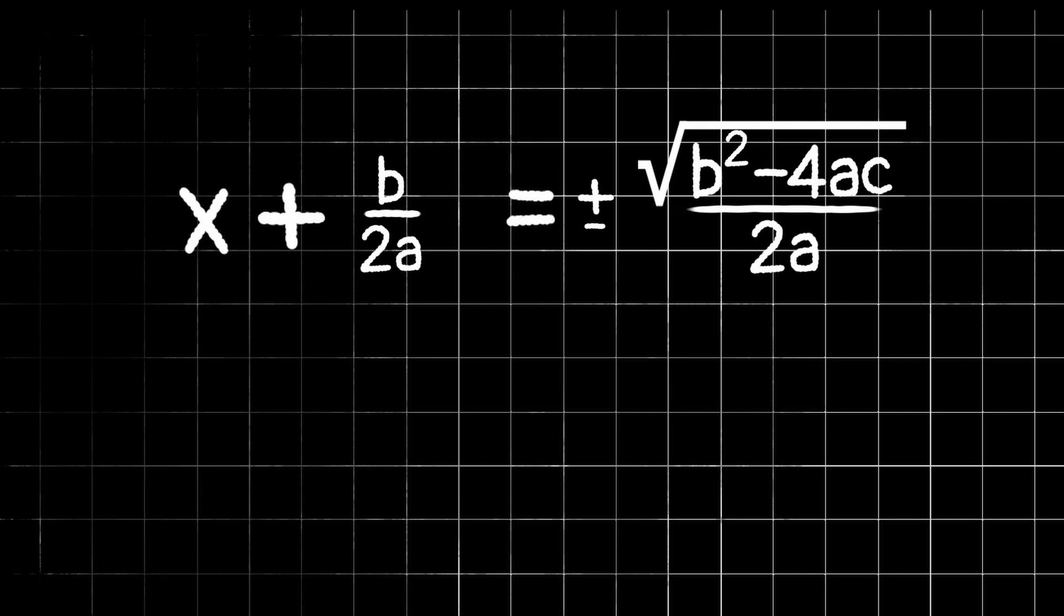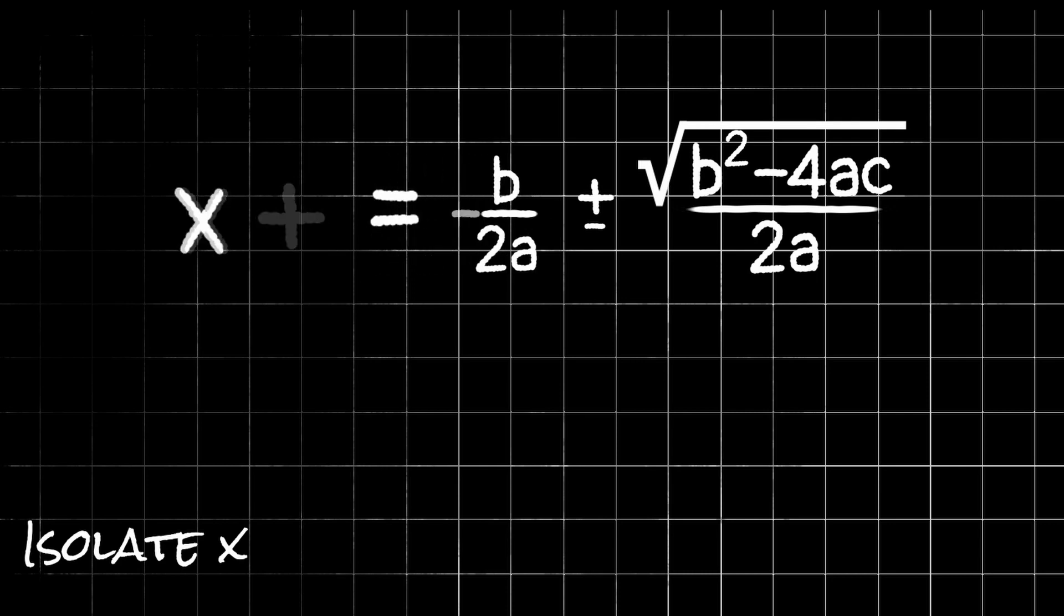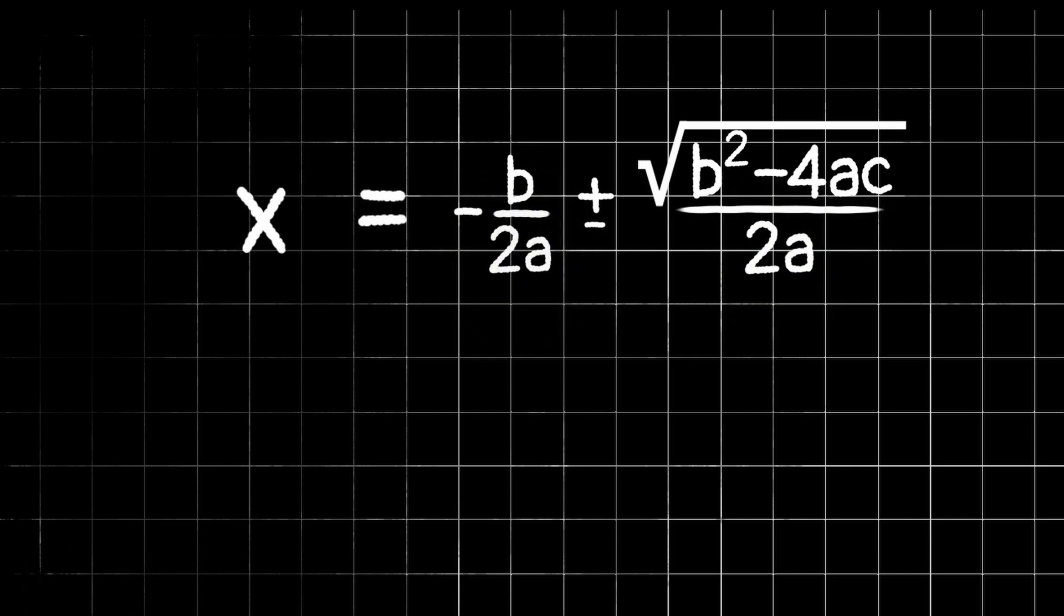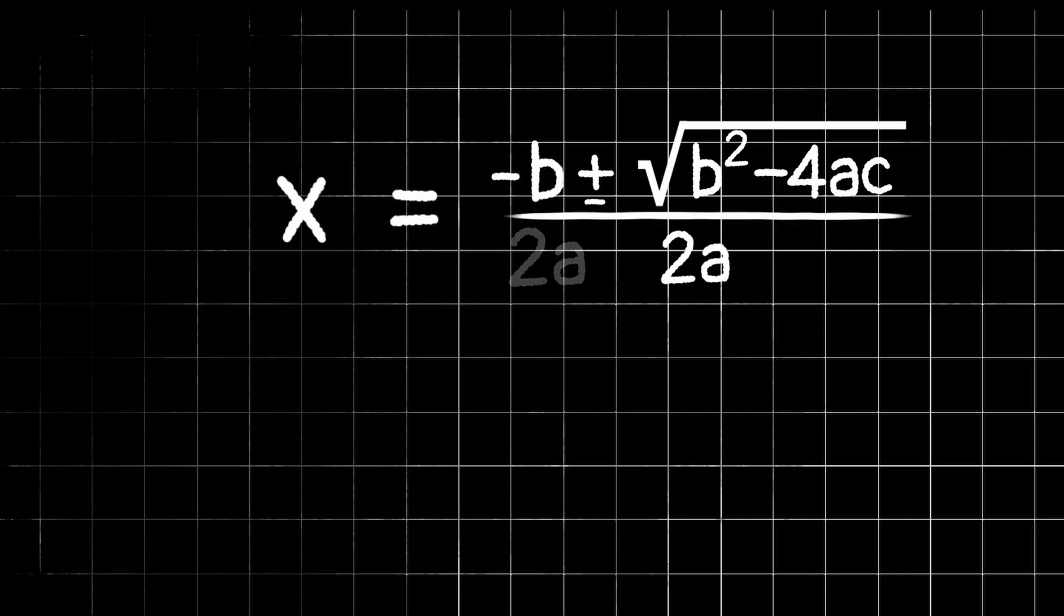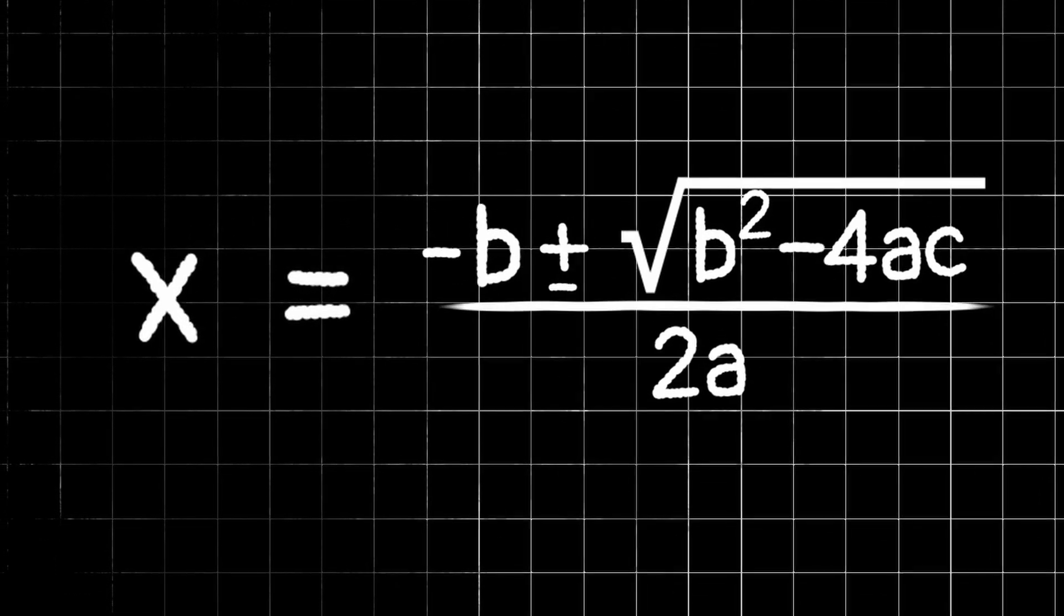So now to isolate our x, we need to subtract a b over 2a from both sides. So we have x equals negative b over 2a plus or minus the square root of b squared minus 4ac over 2a. But now we have two fractions with the denominator 2a, so we can combine them into one fraction. So we have negative b, or how I was always taught to say, the opposite of b plus or minus the square root of b squared minus 4ac all over 2a. And that is the quadratic formula.